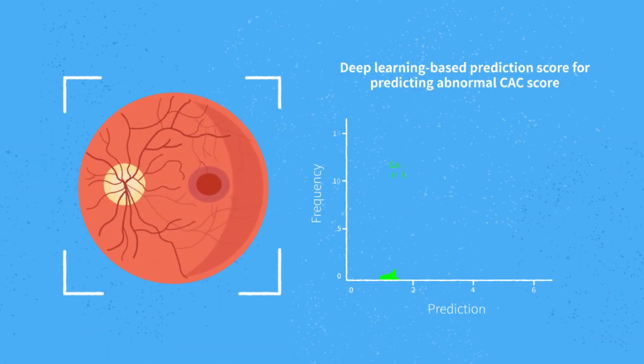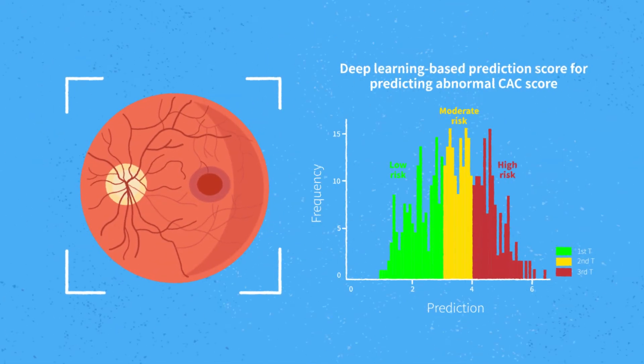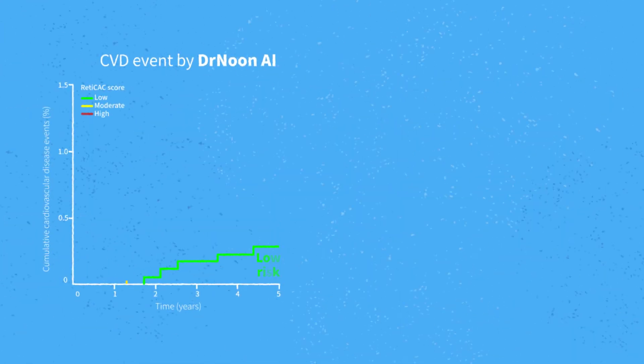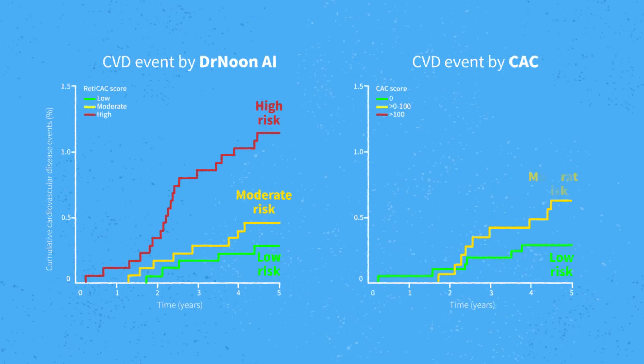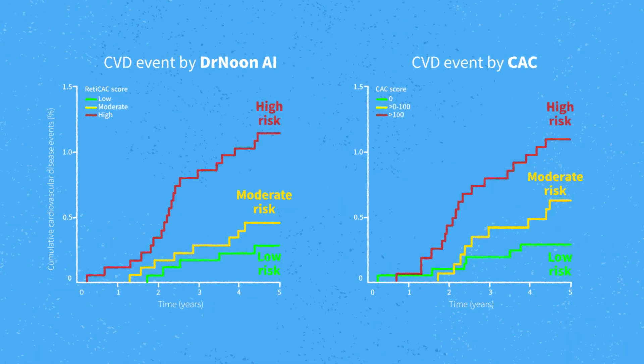Dr. Noon adapted its AI into a three-tier cardiovascular risk stratification system, which is clinically proven to have comparable outcomes with current three-tier CAC scores in predicting cardiovascular disease events.